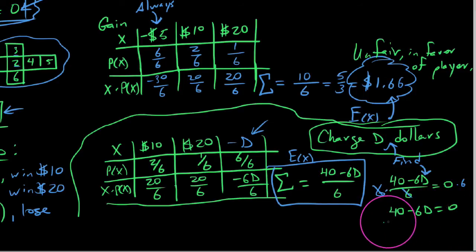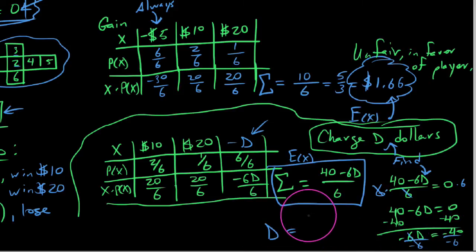But now what we're going to do is subtract 40 from both sides. So we'd say -6D equals -40. And so now we'll divide both sides by -6. And so we get D is equal to positive 40/6, or that would be 20/3 dollars.